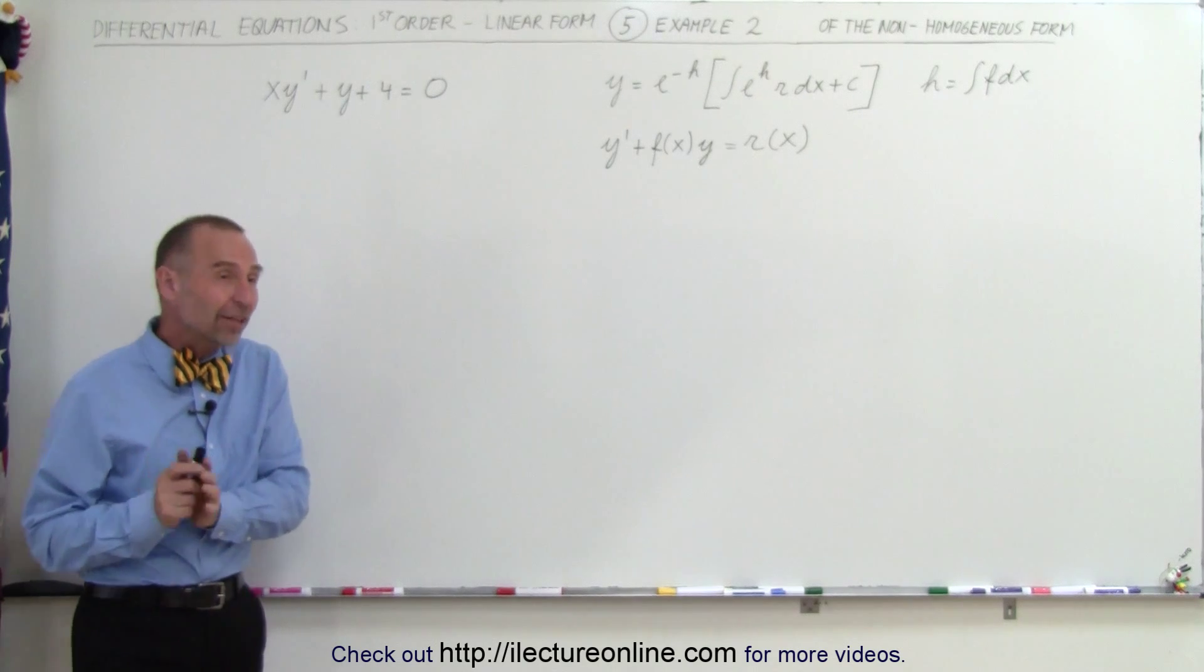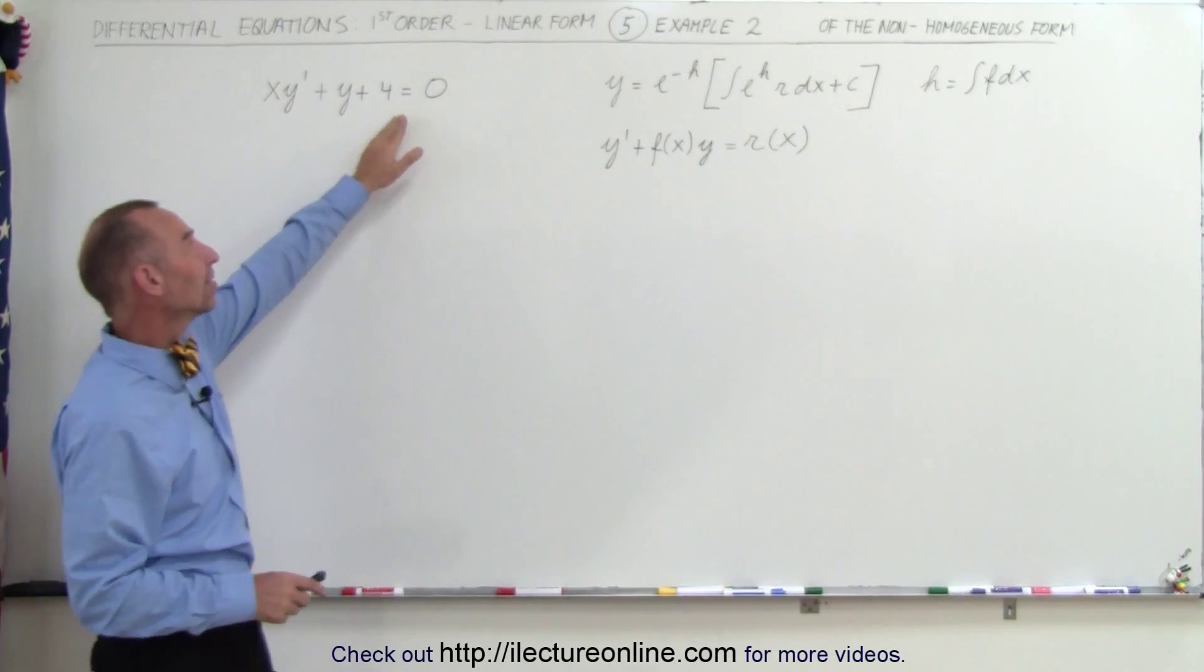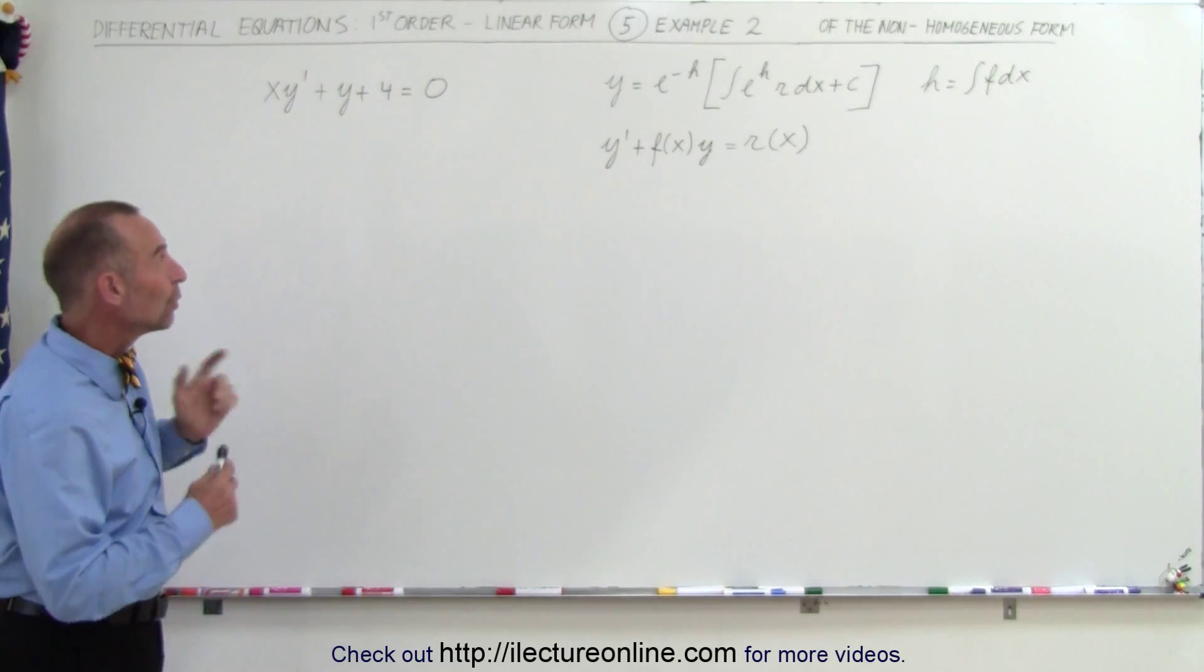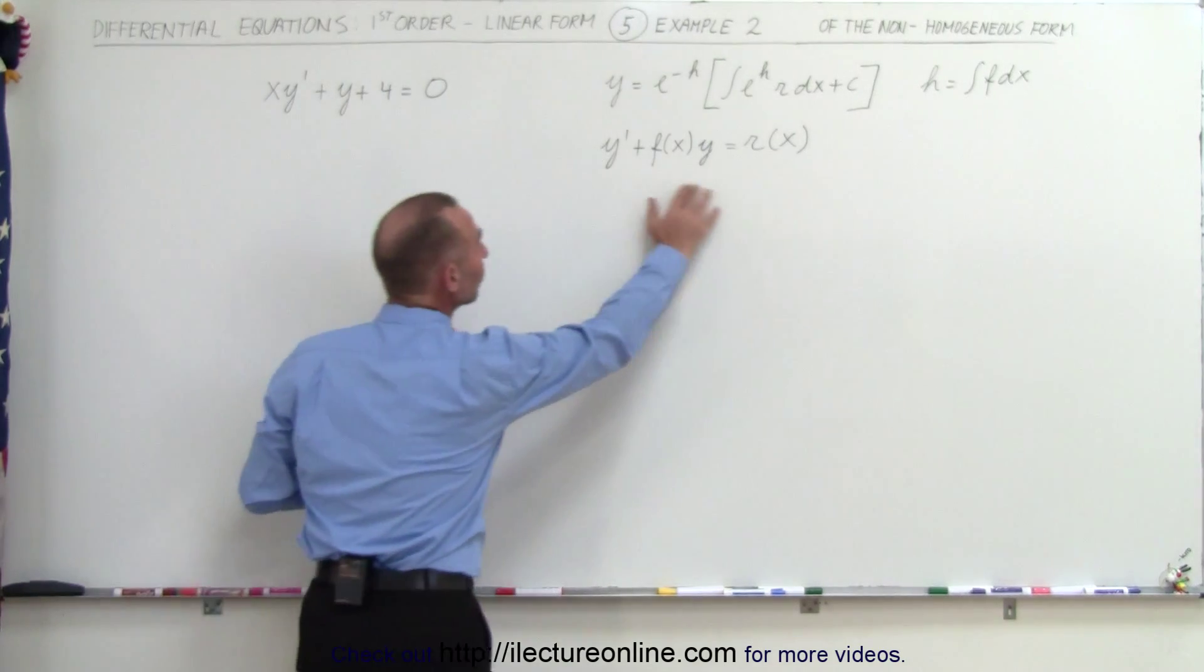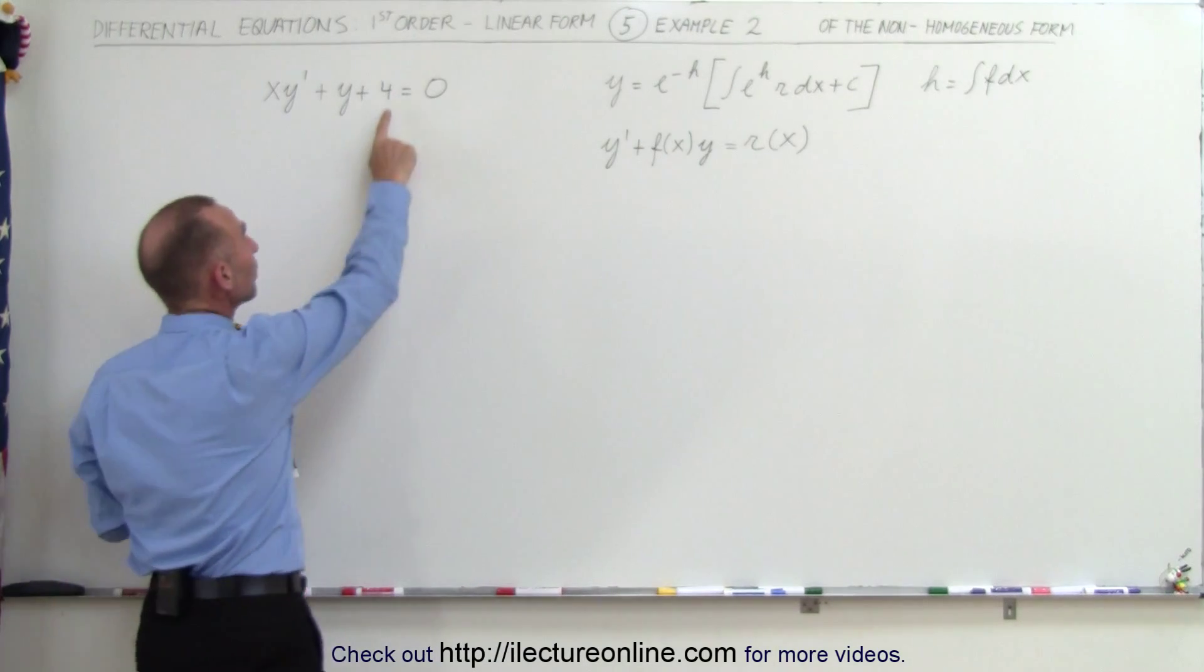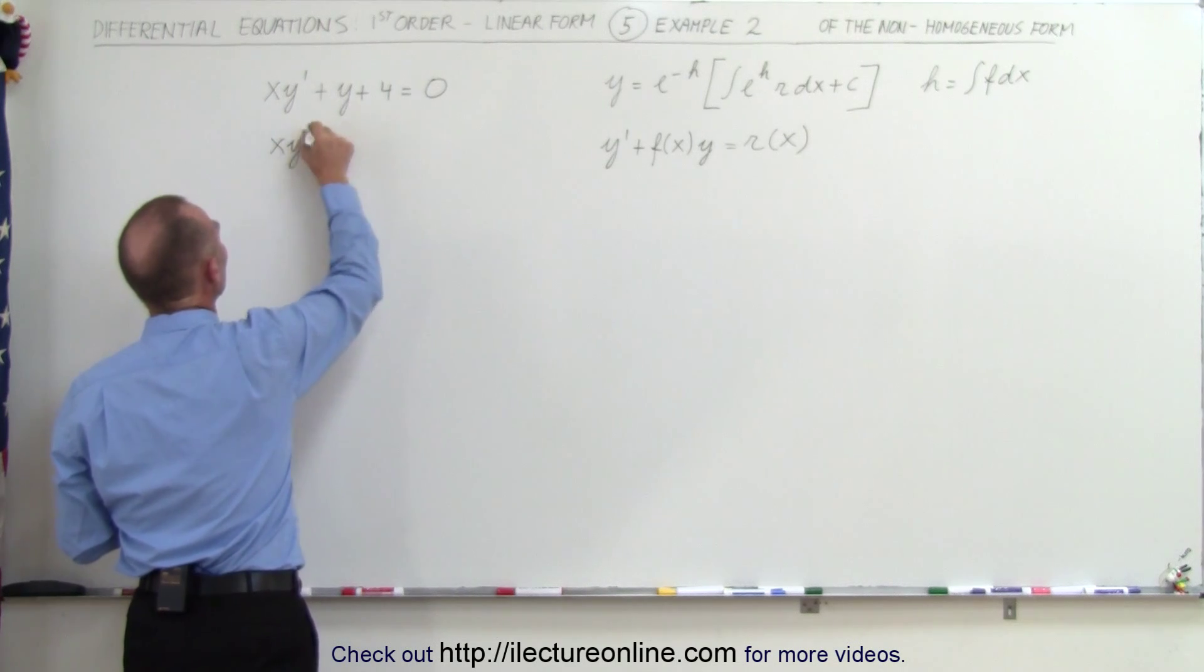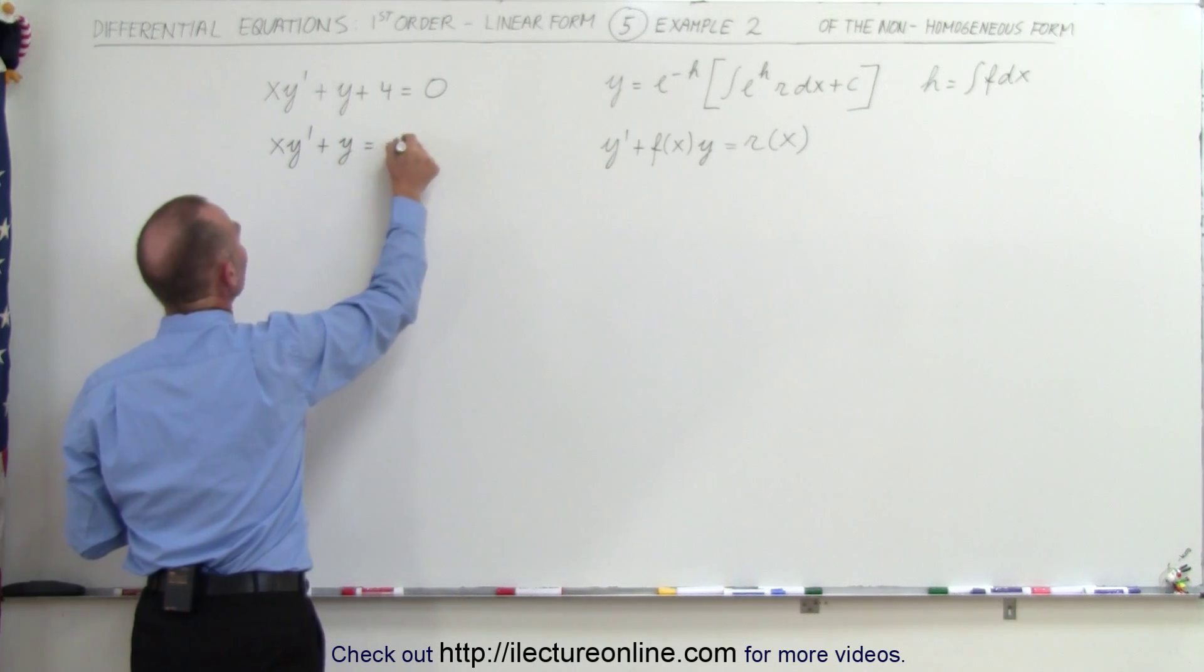Now, at first sight you may think, wait a minute, this is a homogeneous equation because the right side is equal to 0. However, if you rewrite it so that it looks like this, you'll find that the right side will no longer be 0. First of all, we need to bring the 4 to the other side, and so this becomes xy' plus y equals negative 4.